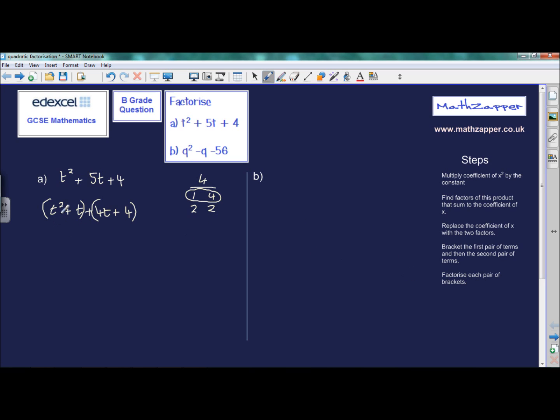So what goes into t squared and t? t, so that can come outside of the brackets. t times t is t squared. t multiplied by 1 is t. So let's just check. t times t, t squared. t times 1, t. Put the plus there.